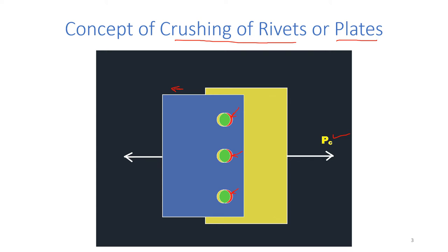Similarly, if the rivets are strong and the plate is of poor material, then the red portion shows the deformation of the plates. The rivets remain at the same position while the plate deforms under pressure.